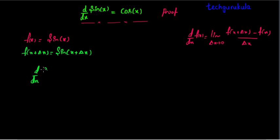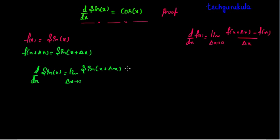That is how simple it states: d by dx of sine x equals to, let us apply the limit, Δx tends to 0, sine of x plus Δx minus sine of x, whole divided by Δx.